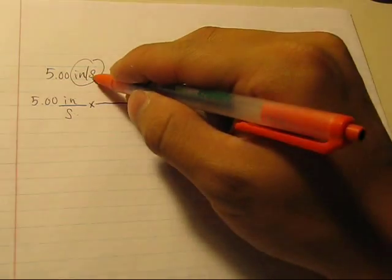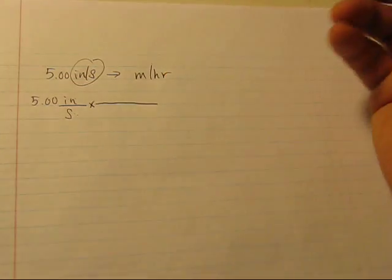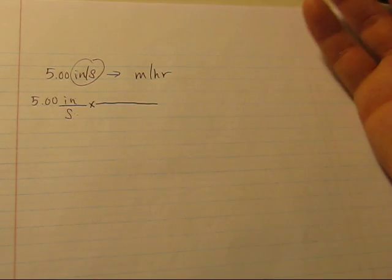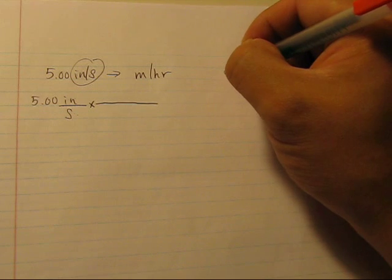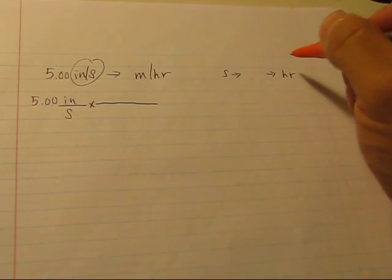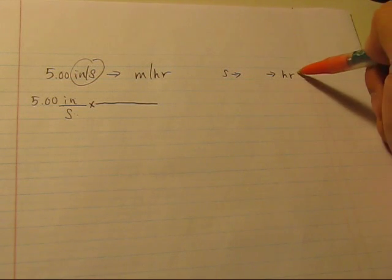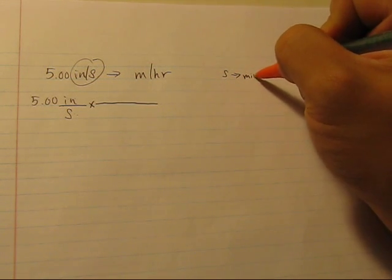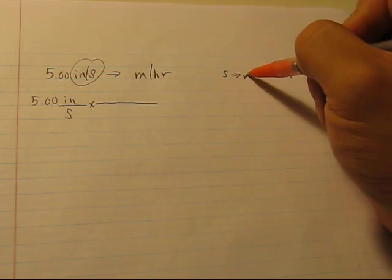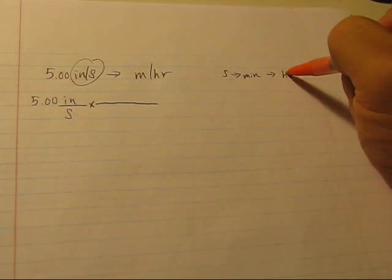So we want to change from seconds to hours. So what is the relationship between seconds and hours? Well, you may not know what is exactly. But what we can do is that we can change to something else and then go to hours. So what is the unit between seconds and hours? Minutes. So we can first change from seconds to minutes and then from minutes to an hour.